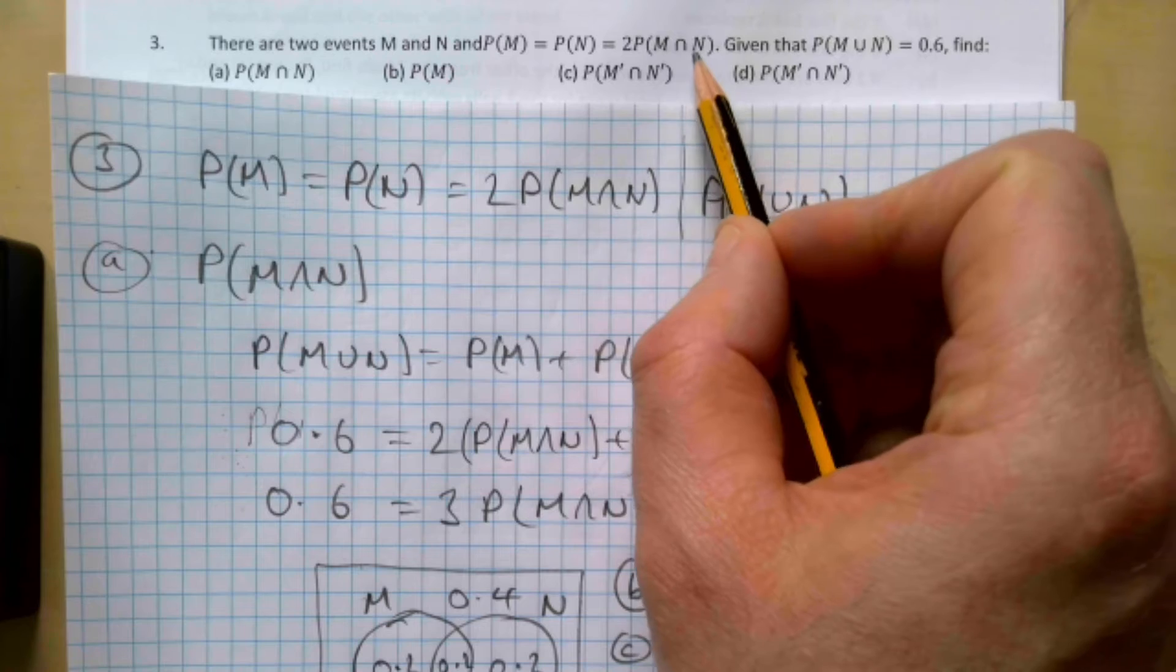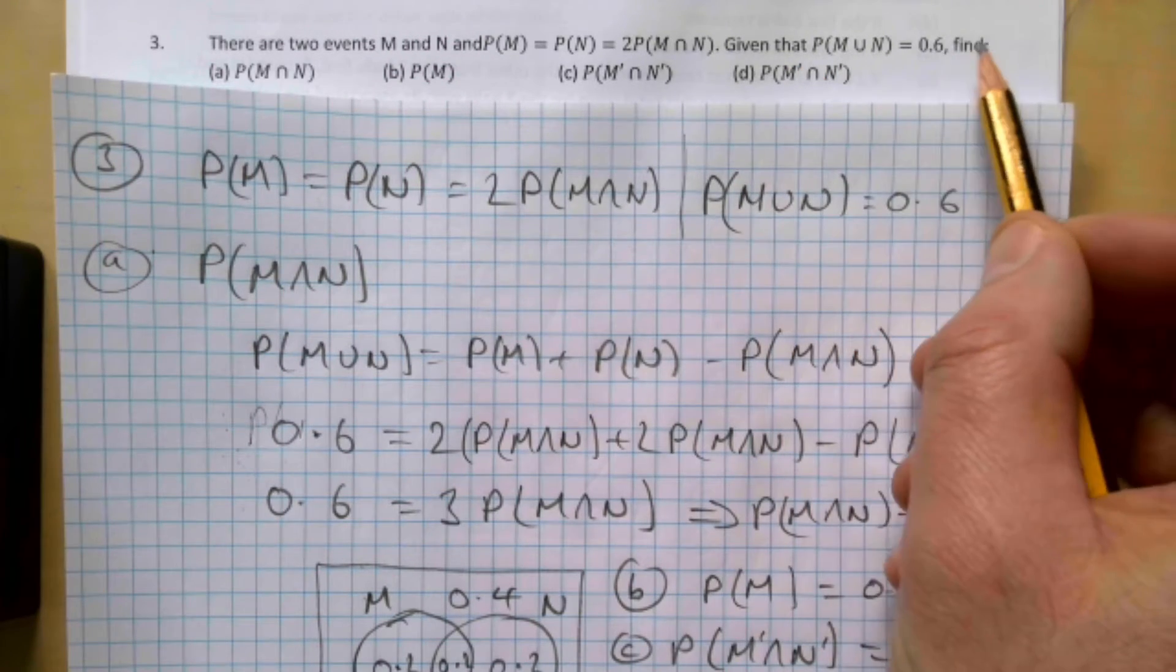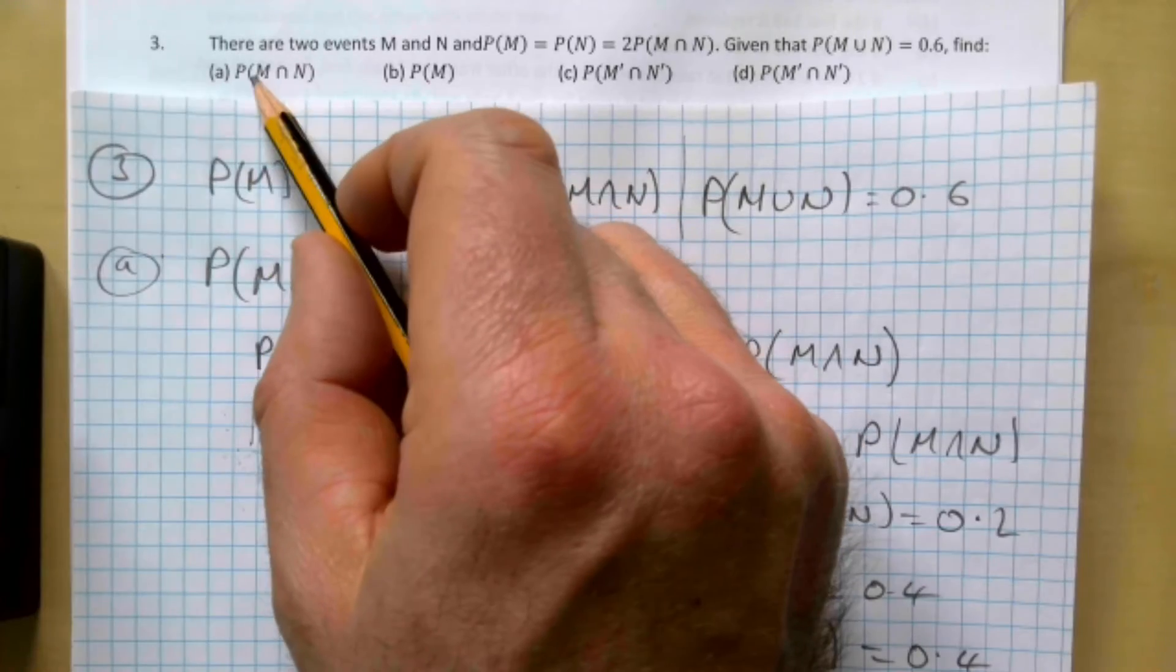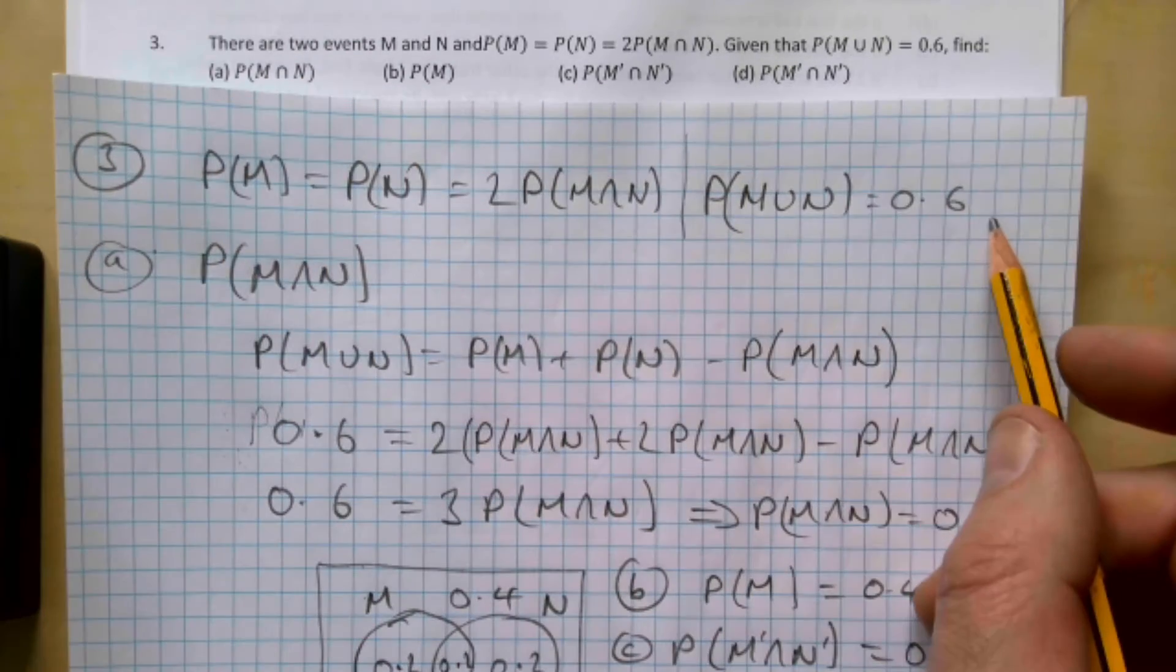equal to twice the probability of M and N. Given that probability of M or N is 0.6, find: (a) the probability of M and N. So I've just written out the information we're given there at the start, and